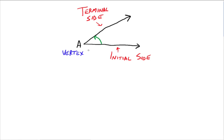To do that, we want to make note of some terminology. Where they meet, we're just calling A for the moment, but where they meet is actually called the vertex. This green arrow says that we're measuring the angle in this direction. So we start here and we're going up here. This side right here that we start with is called the initial side, and then the side that we go to over here is called the terminal side.